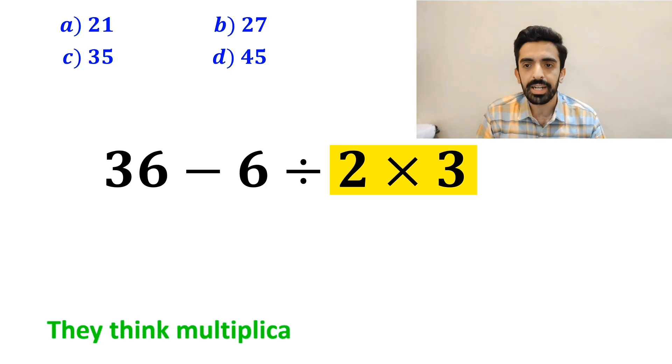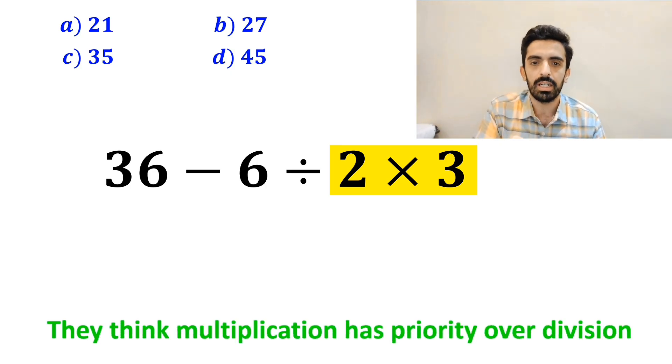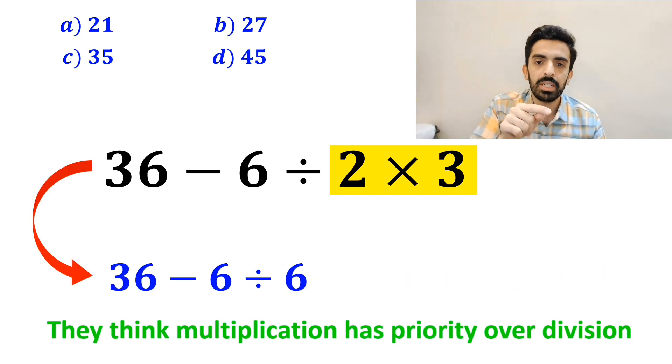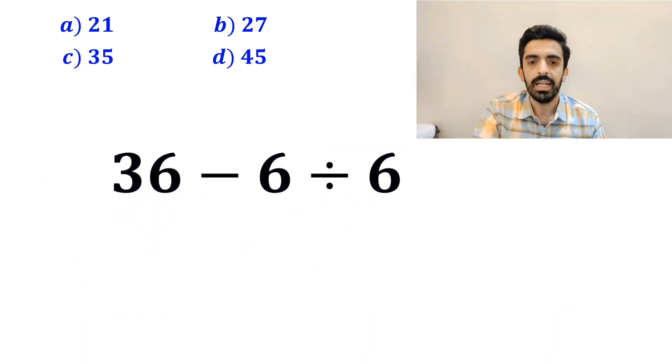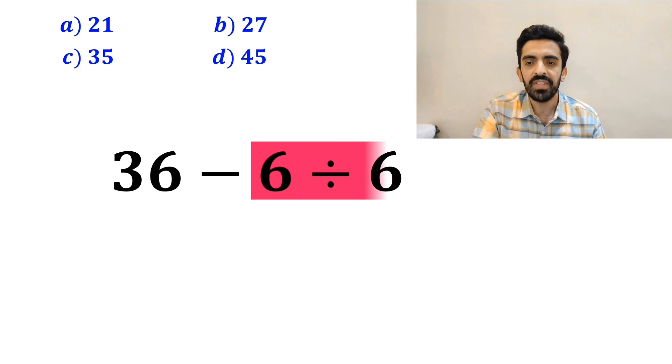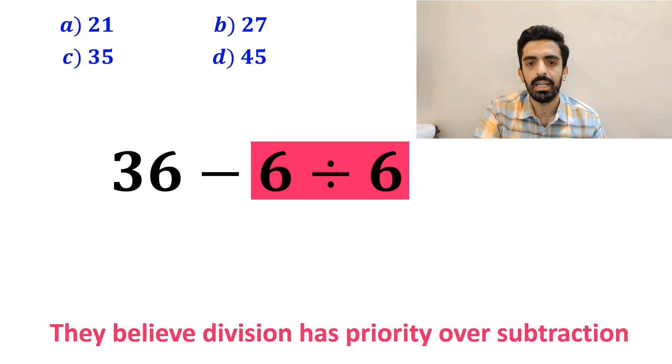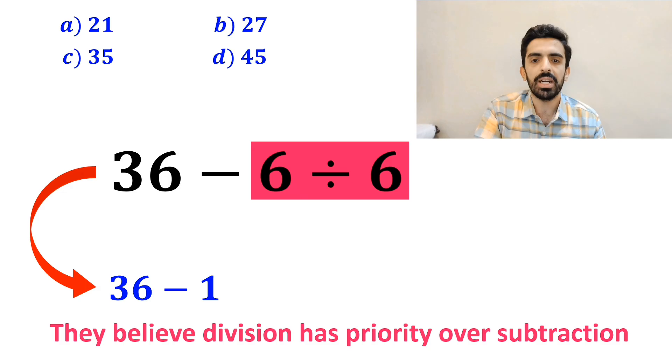Because they think multiplication has priority over division. So, they rewrite this expression as 36 minus 6 divided by 6. Next, they perform the division between the two 6s, since they believe division has priority over subtraction. And rewrite this expression as 36 minus 1, which ultimately gives them the answer 35.